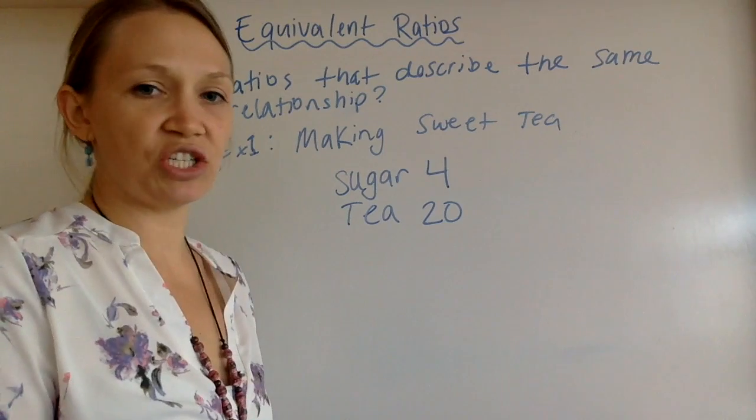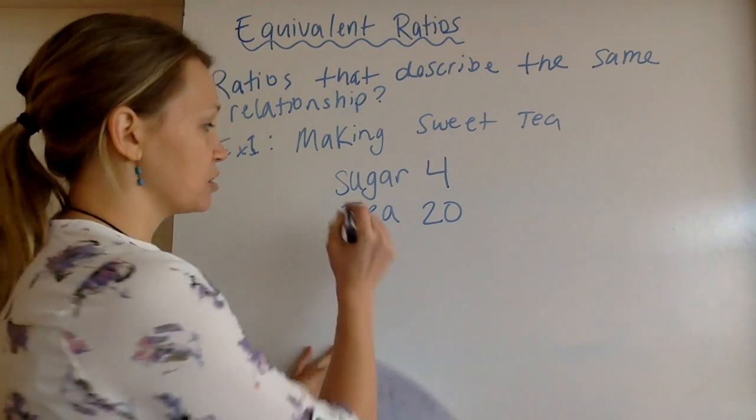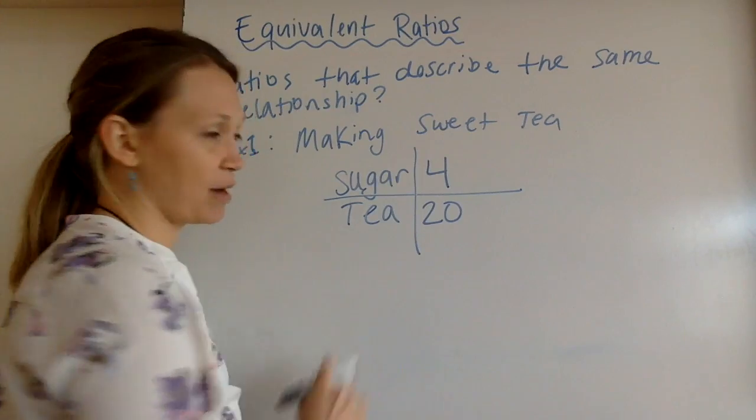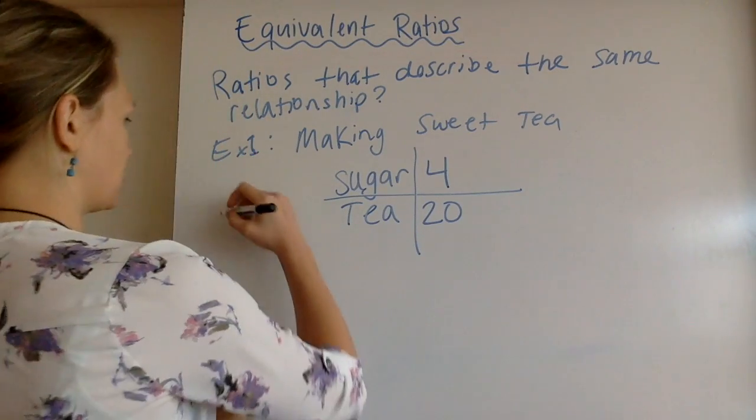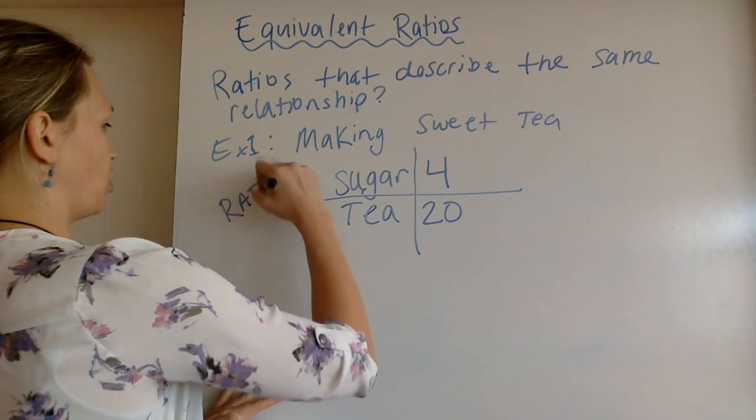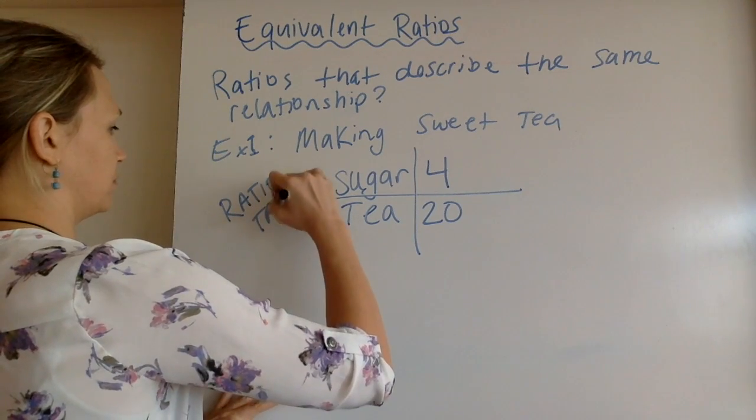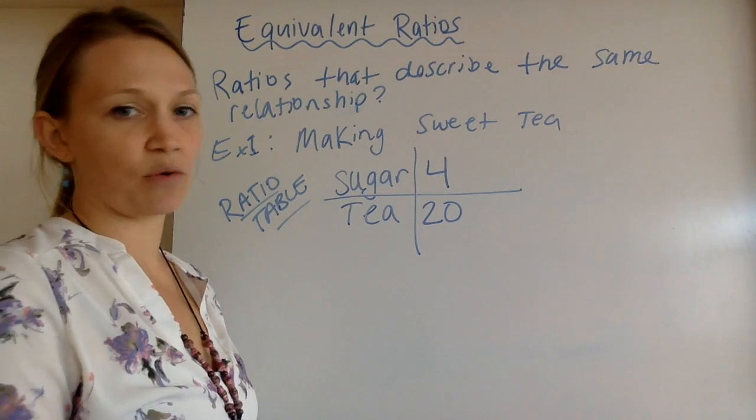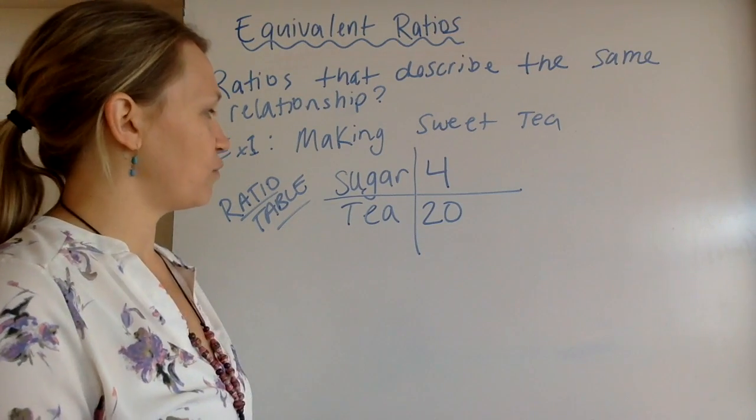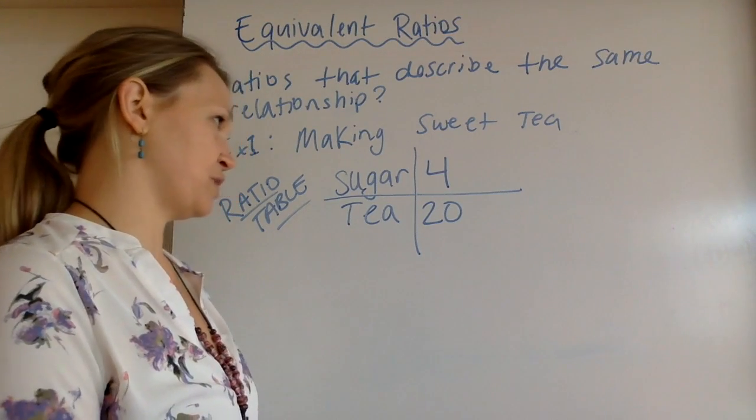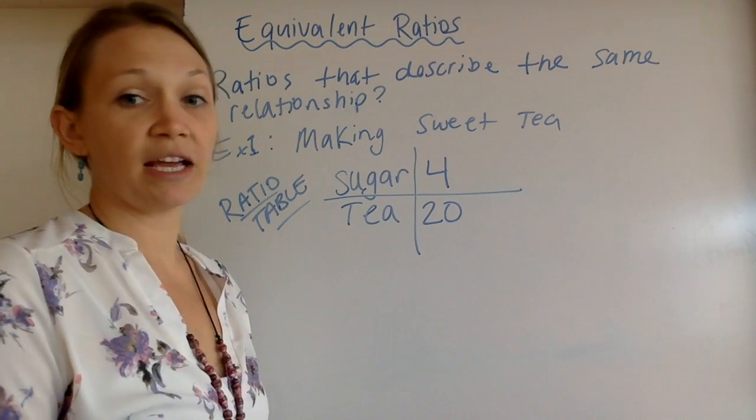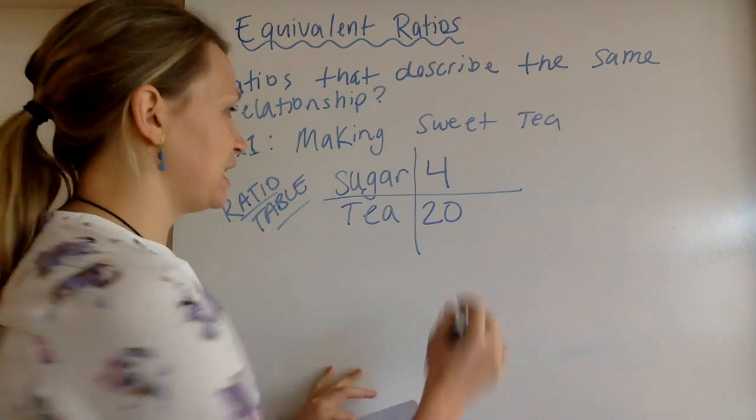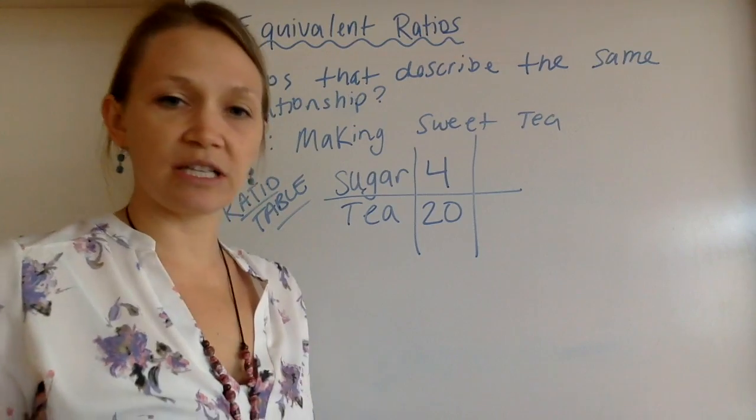I'm going to strategically make this into what we call a ratio table to show you how to do problems later on. So this is called a ratio table. You've already seen these a few times. Now we're going to start utilizing them quite often. So if we need four tablespoons of sugar and 20 tablespoons of tea, that makes a nice big delicious drink for you.